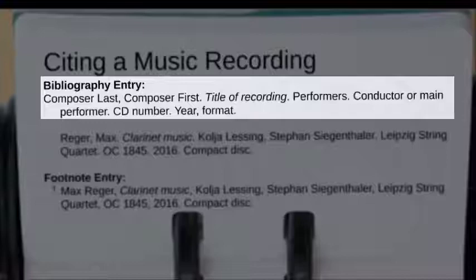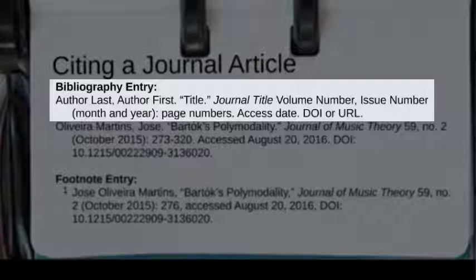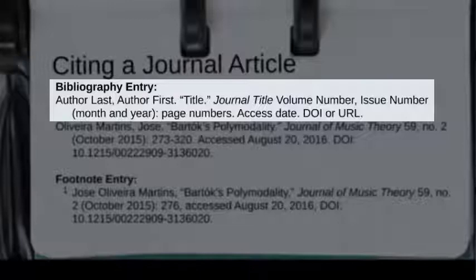Let's look at citing a journal article. A journal article includes the author name, the title of the article in quotations, the title of the journal the article is found in written in italics, and the volume number and issue of that journal. Include the month and year of the journal issue, page numbers of the article, and the date that you accessed the journal article. Also insert a DOI or URL.